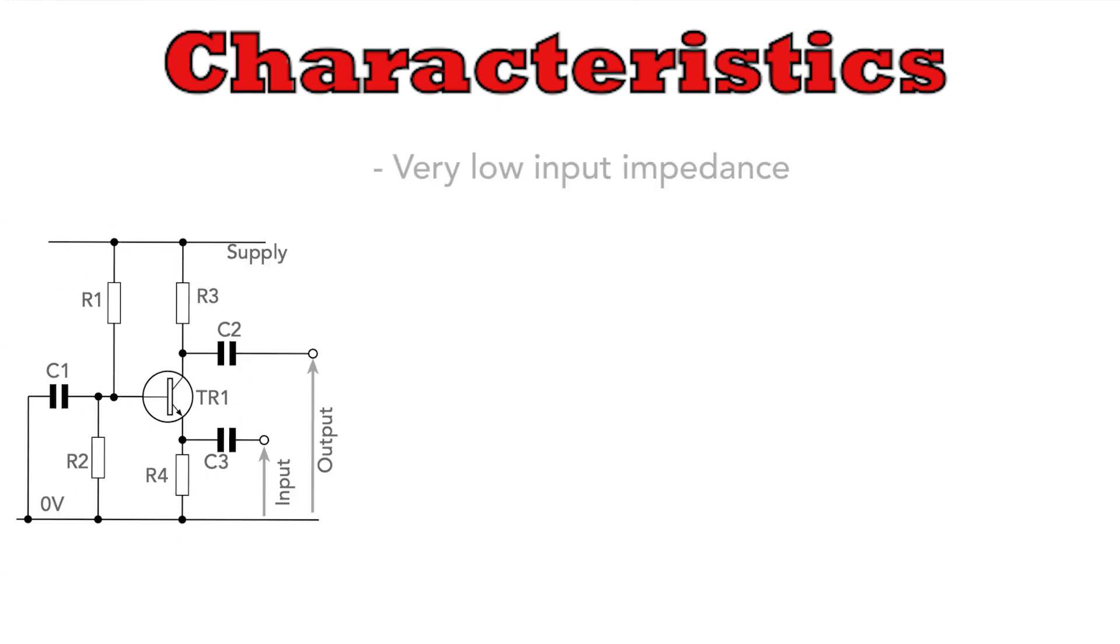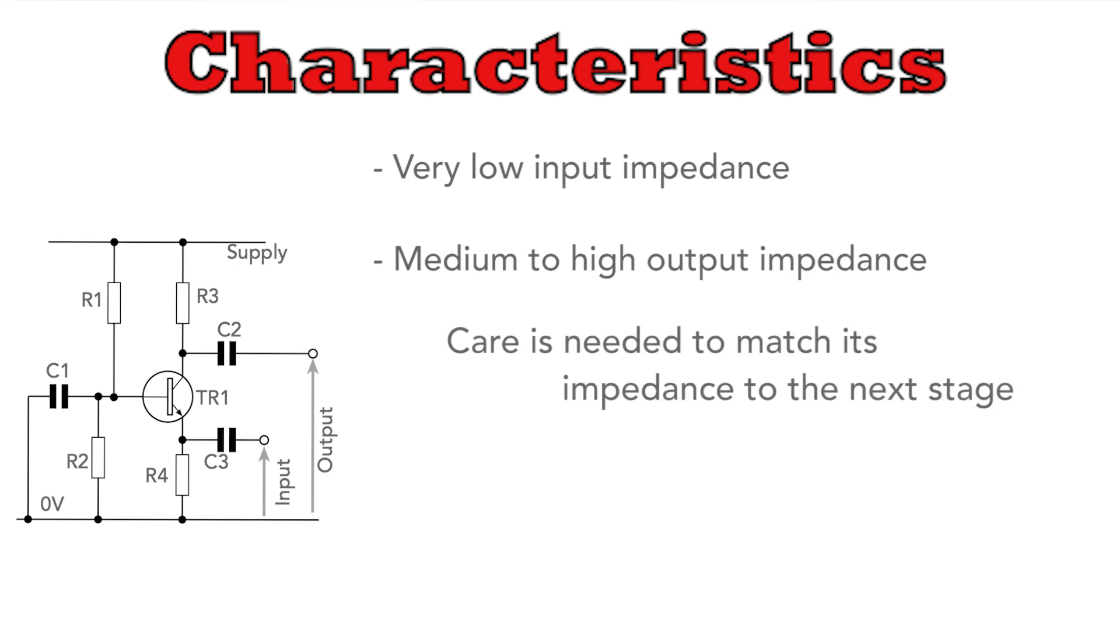The main one is that the Common Base amplifier has a very low input impedance, making it suitable for matching with low impedance sources. Conversely, it has a medium or relatively high output impedance, so care is often needed in matching it to the next stage.